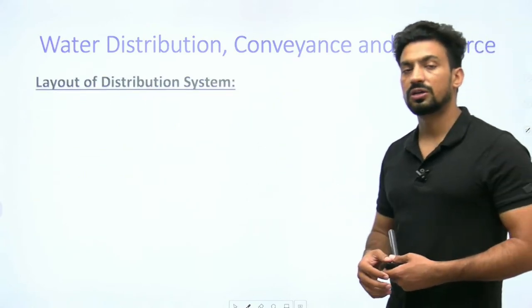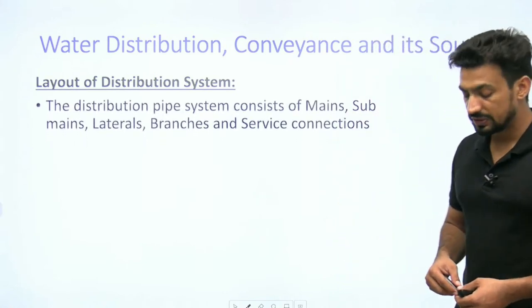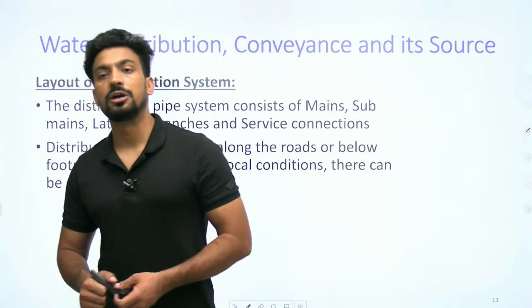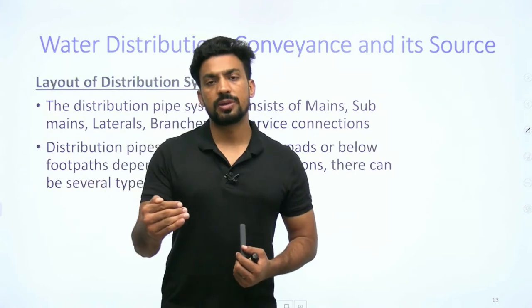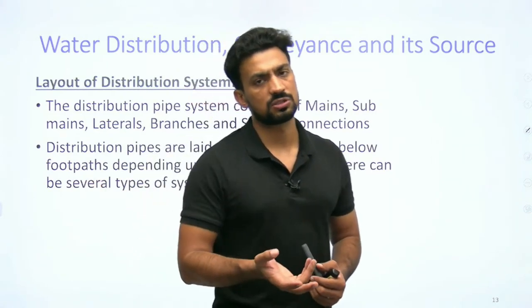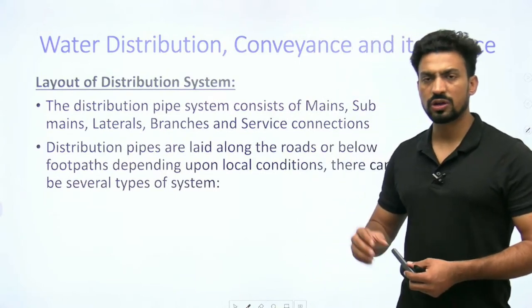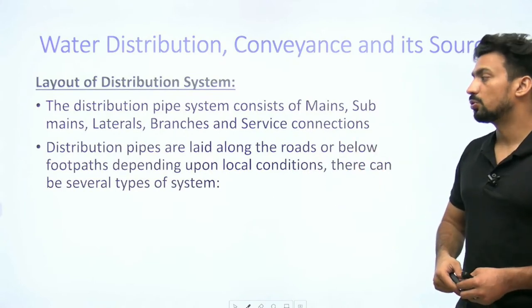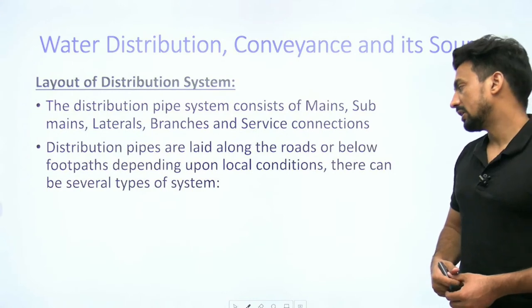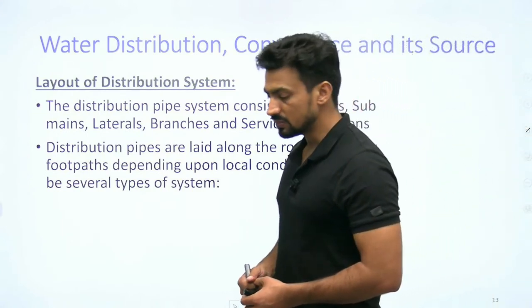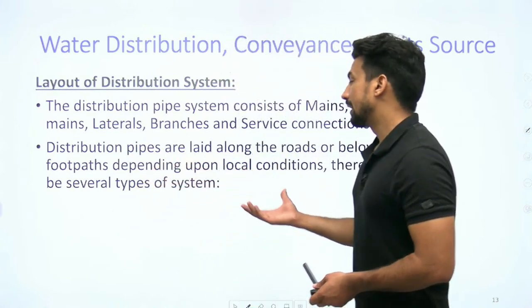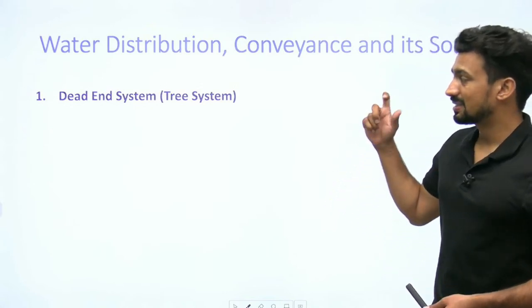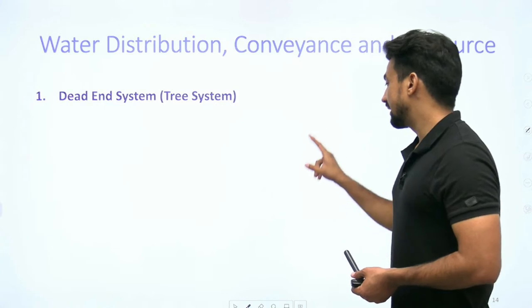Distribution system की बात करें तो पूरे pipeline system में सबसे पहले एक main pipe होगी, फिर sub main होगी, sub main के आगे laterals होंगी, फिर उनकी branches होंगी, और घर तक पहुंचने के connections होंगे। इन्हें roads के किनारे या footpath के side में लगा सकते हैं। Dead end system या tree system - जैसे tree में एक stem से branches निकलती हैं, sub-branches निकलती हैं।